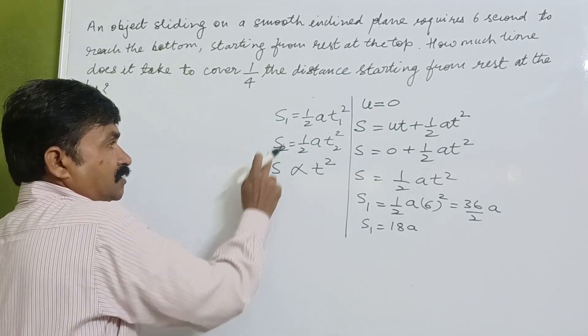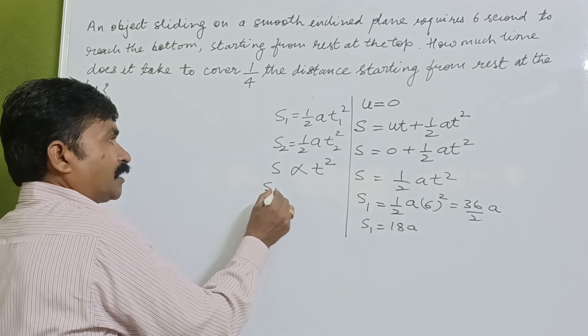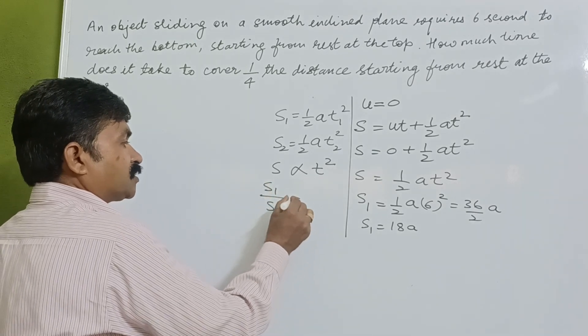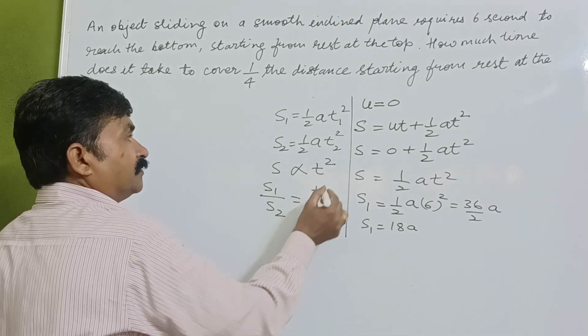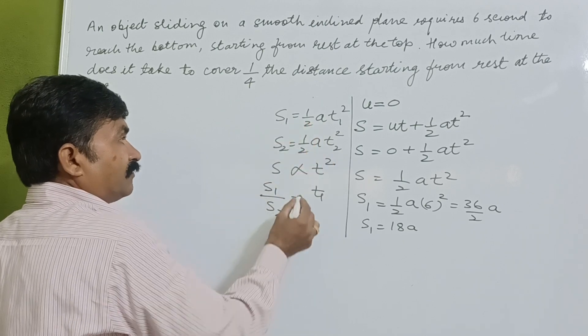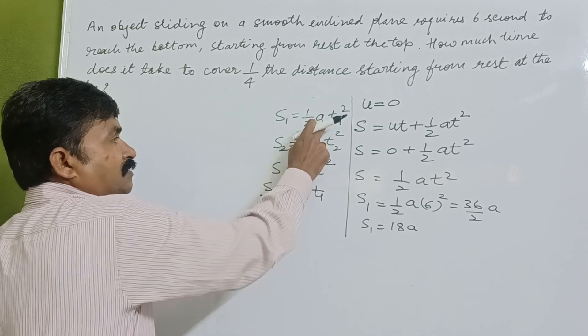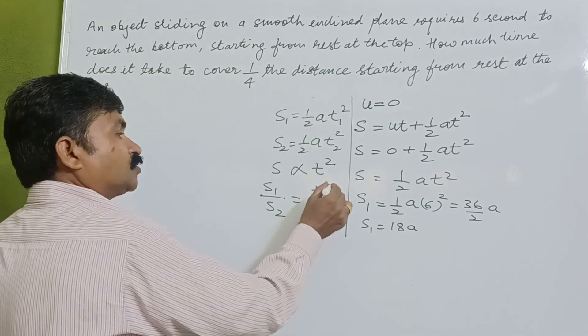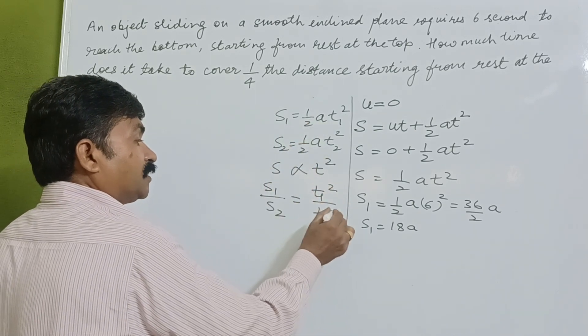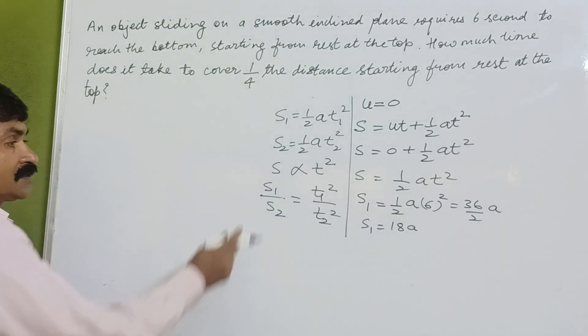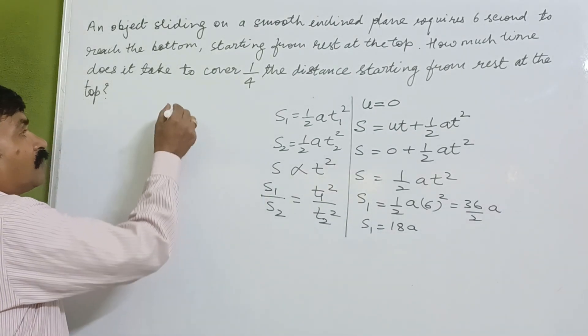If we take these two equations, we can have s1/s2 which equals t1²/t2². If we divide s1 by s2, the 1/2 and a cancel out, leaving us with t1²/t2².